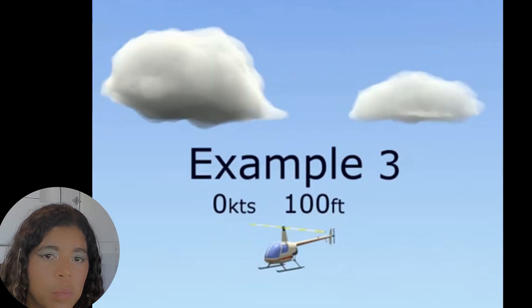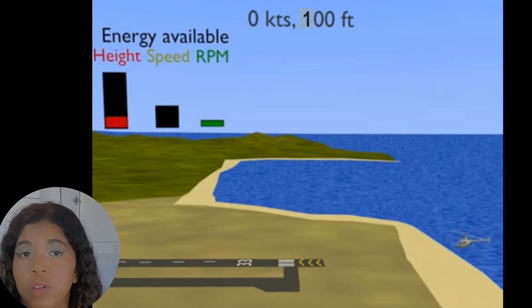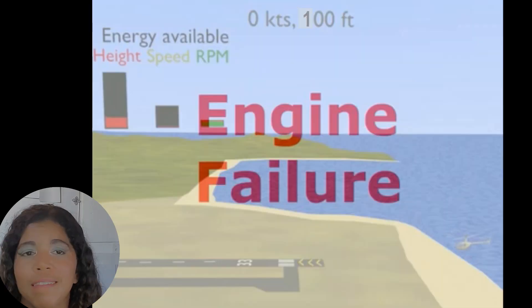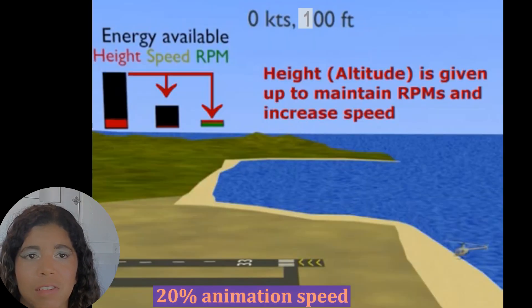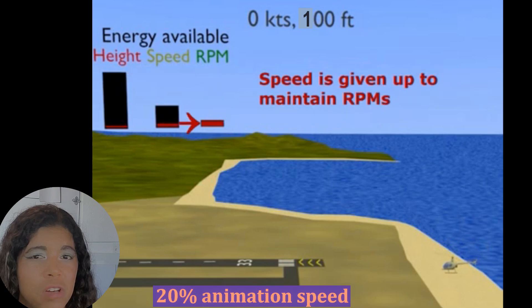Now let's take a look at another example: zero knots and 100 feet. Okay so before we go ahead and play this animation take a look here, we have no speed energy, we have very limited height energy, and we currently have our RPMs just before the engine fails. As the helicopter is descending there's an attempt to maybe speed up a little bit however there's not enough time or energy in your height to get that speed going.